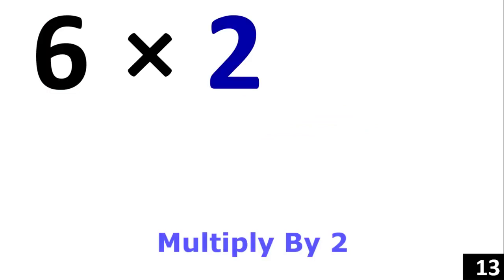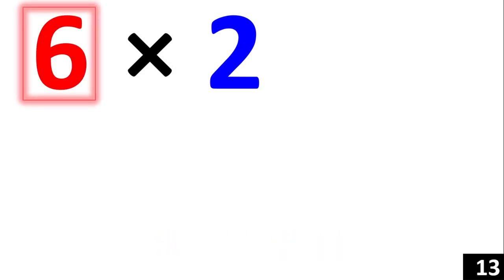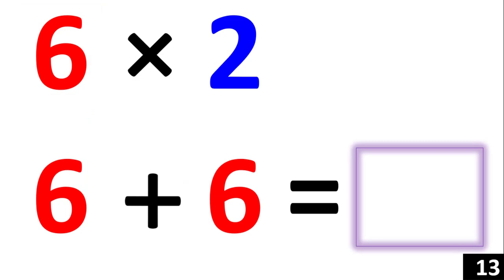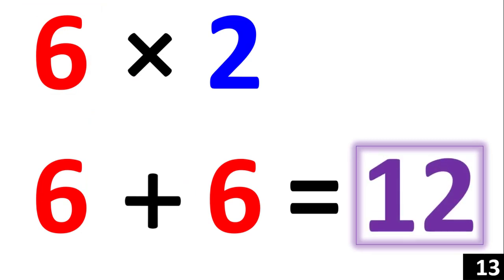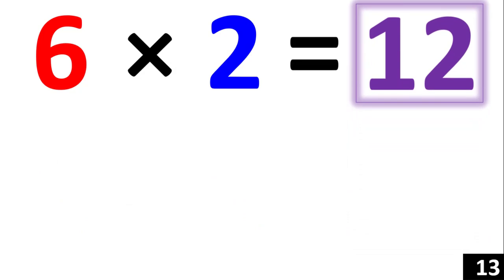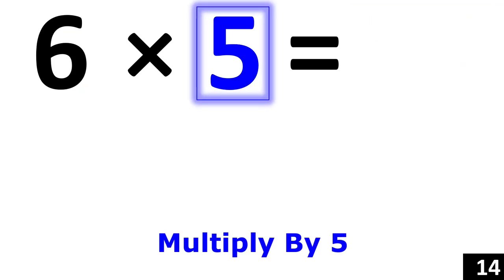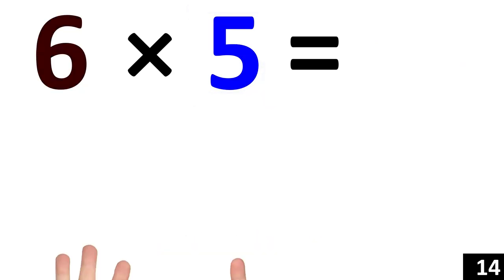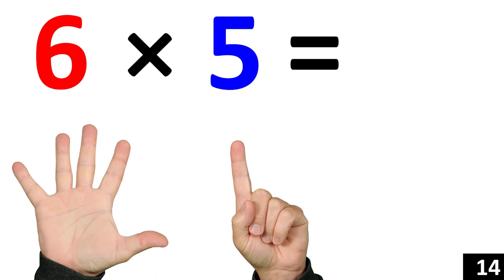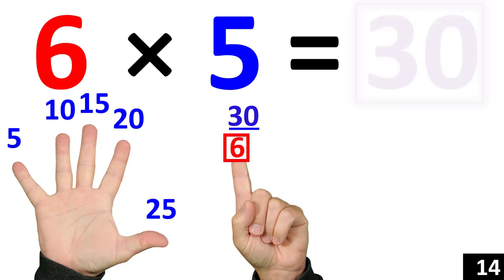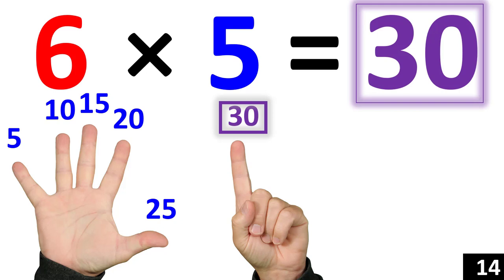For 6 times 2, we just use the rule of 2. 6 times 2 is the same thing as 6 plus 6. And 6 times 5 is the same thing as counting by 5, six times: 5, 10, 15, 20, 25, 30. So we see that 6 times 5 is equal to 30.